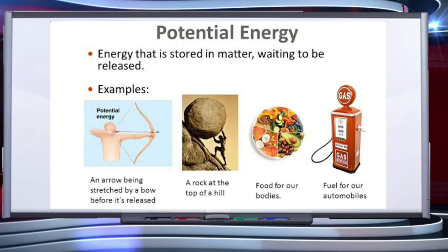An object may simultaneously possess potential energy as well as kinetic energy, and the sum of these energies is called the total mechanical energy of the object. A flying bird, a flying kite, an aircraft in flight, a vehicle running on a hilly track, etc., have potential energy as well as kinetic energy.